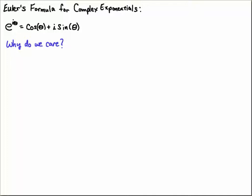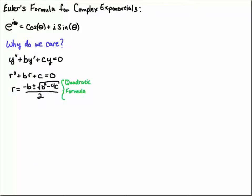So why do we care? Here comes the application. Suppose that you have a second-order ODE with constant coefficients. It's linear - the derivatives of y appear linearly. The coefficients b and c can be constants and it's homogeneous. That means we have a zero on the right-hand side.